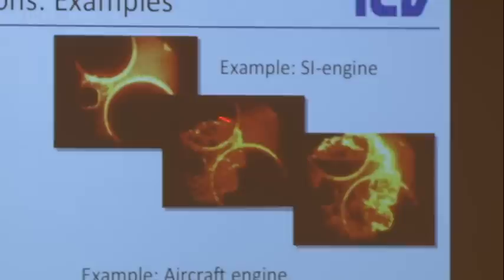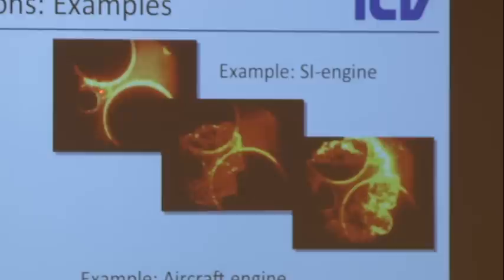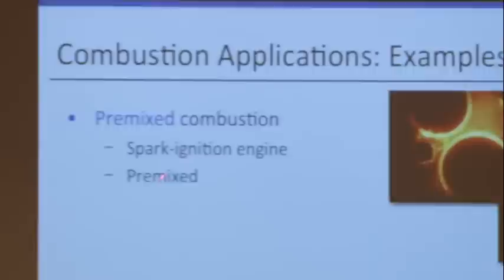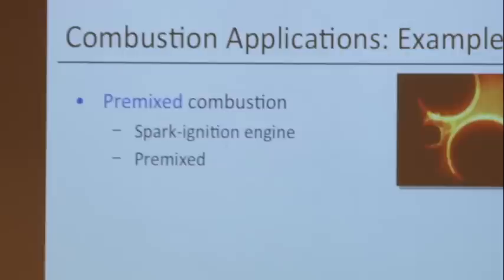In combustion we often distinguish between two modes: premixed and non-premixed. Premixed means you mix fuel and air together, spark it somewhere, and get a flame front that burns through the mixture. An example is spark ignition engines — you see the piston, the valves, ignition creates a flame kernel that grows and burns through the premixed charge. Another example is a stationary gas turbine.